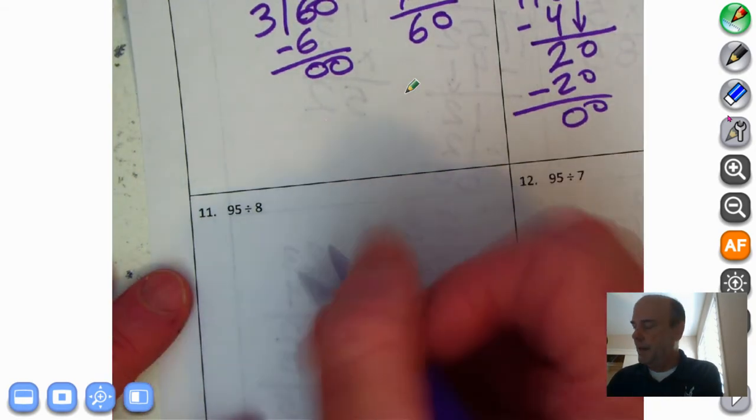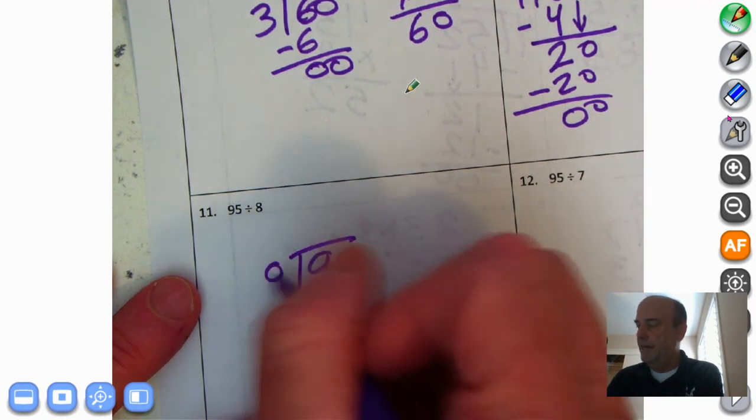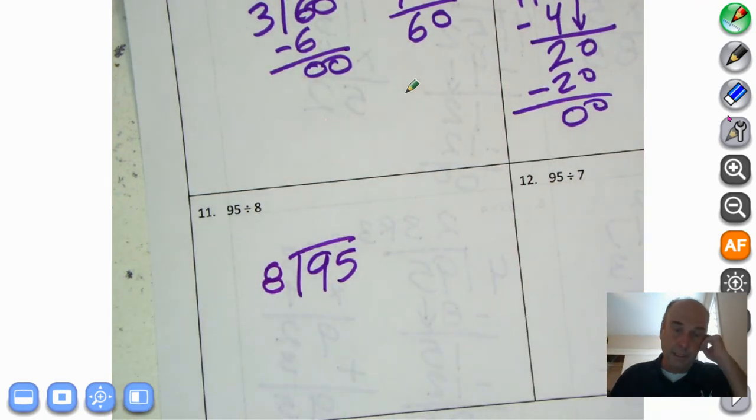Go ahead and give this one a try on your own. Pause the recording. We're doing 95 divided by 8. Go ahead and pause the recording and give it your best shot. Welcome back.